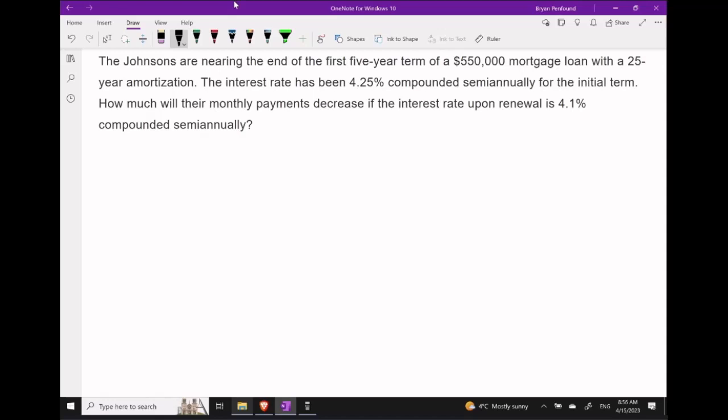The Johnsons are nearing the end of the first five-year term of their mortgage of $550,000. Their mortgage currently has a 25-year amortization period with an interest rate of 4.25% compounded semi-annually. If the interest rate changes to 4.1% on their renewal, let's try to determine how much their monthly payments are going to decrease by.